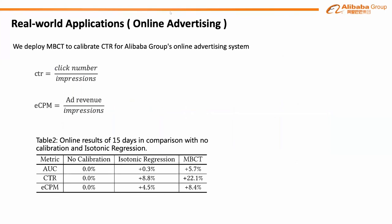To the best of our knowledge, previous work has not applied calibration methods to real-world applications. We deploy MBCT to calculate click-through rate for an online advertising system and conduct an online A/B test for 15 days, using click-through rate and effective cost per mile as key performance metrics. The online experiment results shown in Table 2 demonstrate significant improvements and great business value.